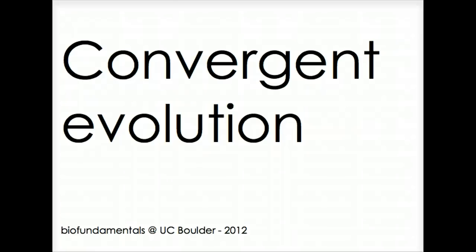Convergent evolution occurs when a similar trait is formed independently in two or more different lineages. That is, the trait is not present in their common ancestor.